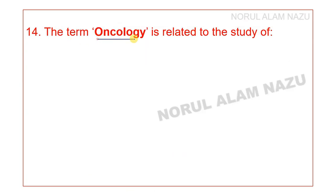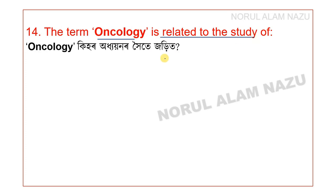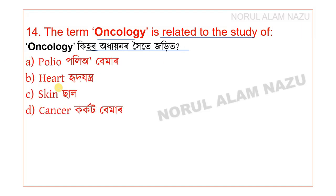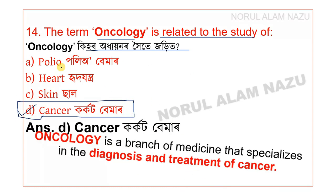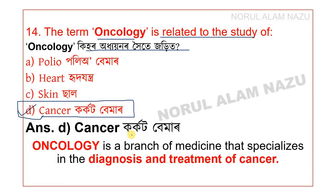Question number 15: The term oncology is related to the study of which subject? Options are Polio, Heart, Skin, and Cancer. Oncology is the branch of medicine that specializes in the diagnosis and treatment of cancer.